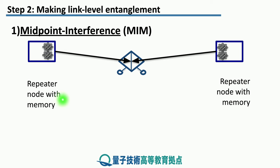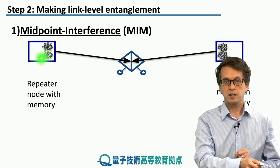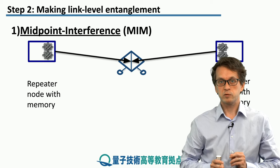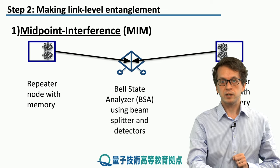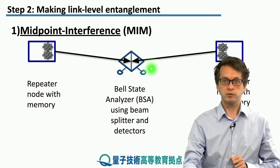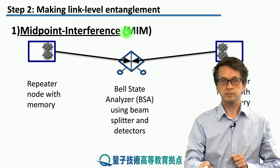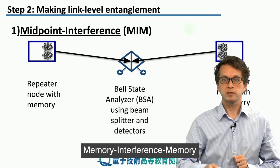These blue boxes represent our network nodes — one node over here and one node over here. Each of these nodes is holding quantum memory, represented here by these little atoms. These are specialized quantum memories that can store any arbitrary state of a qubit. In the middle, what we have is something known as a Bell State Analyzer, or BSA for short. This setup is referred to as MIM, or Memory Interference Memory.